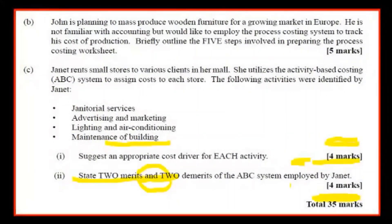Part B now. John is planning to mass produce wooden furniture for a green market in Europe. He is not familiar with accounting and would like to employ the process costing system to track his cost of production. Briefly outline the five steps involved in preparing the process costing worksheet.